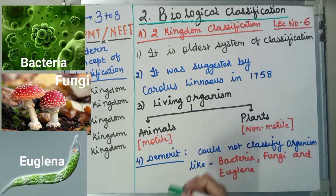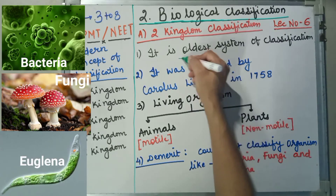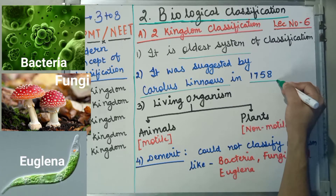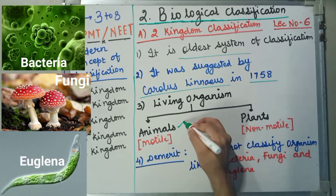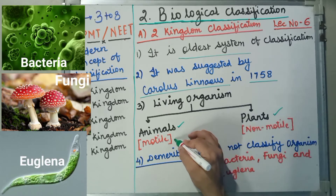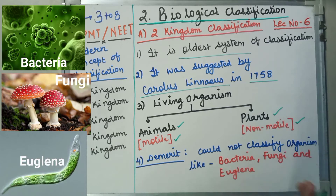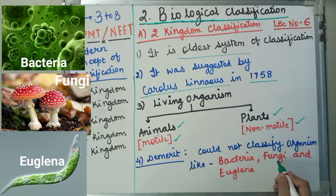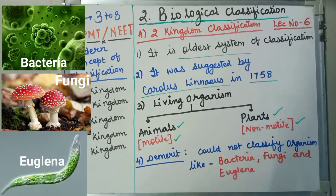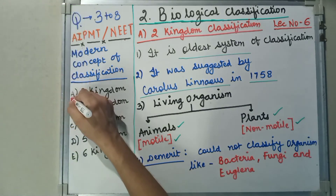To quickly revise: it is the oldest system of classification, suggested by Carolus Linnaeus in 1758. He divided all living organisms into animals and plants. Mobility was an important factor in his classification. The demerit was that it could not classify bacteria, fungi, and Euglena. Here we complete the two kingdom classification system.